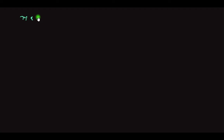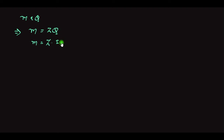We basically have only one formula in electrolysis, which is that the mass deposited on the electrode is directly proportional to Q. This can be written as M = ZQ, or M = Z × I × T. The numericals will be based on these two formulas only.